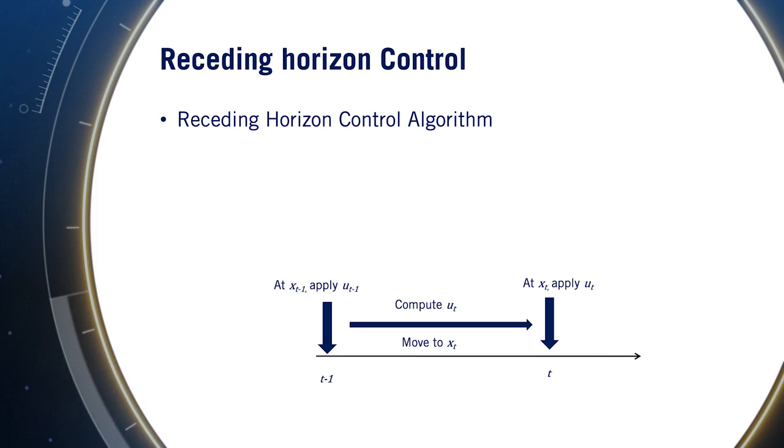One issue that arises in implementation, however, is that because optimization can take some amount of time, the state of the vehicle when starting the optimization will be different from the state of the vehicle when completing the optimization. As a result, we must use a predicted state in the optimization for the time at which the control input will actually be applied.